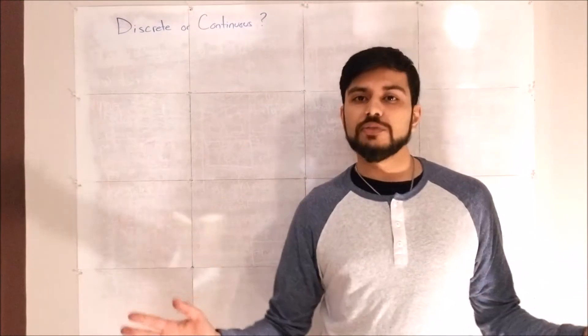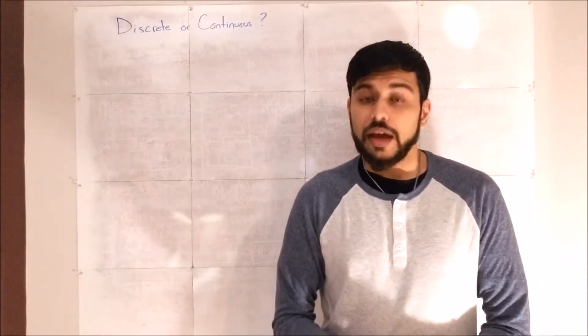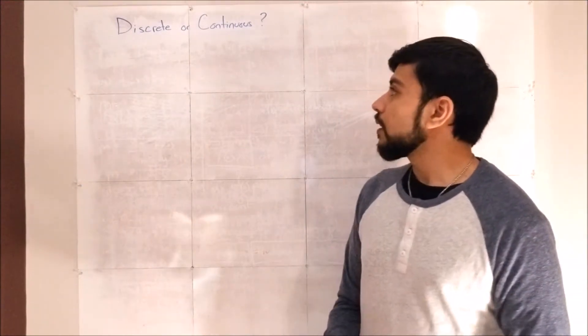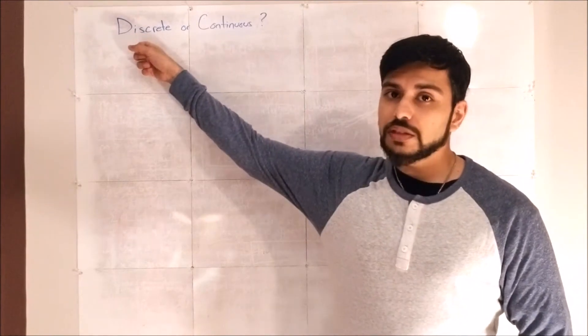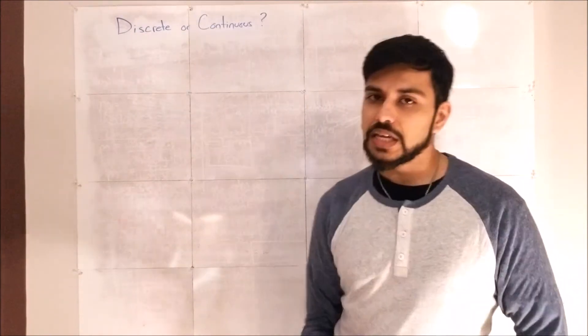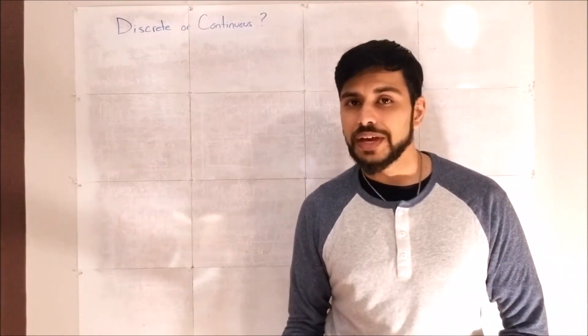So solution set is all of your possible values that are valid for inequality. But you might have a discrete solution set, or you might have a continuous one. How can you tell?